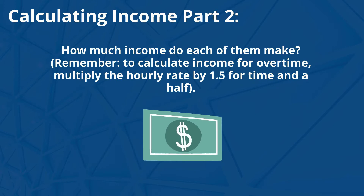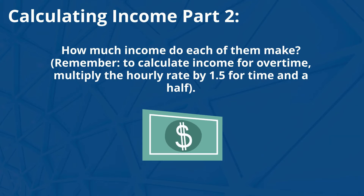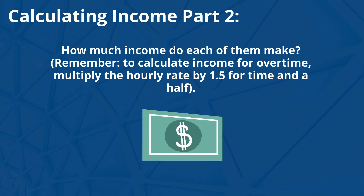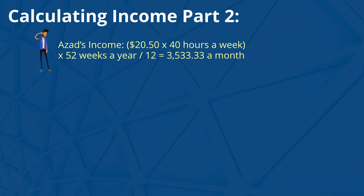Remember, to calculate income for overtime, multiply the hourly rate by 1.5 for time and a half. Asad's income: $20.50 times 40 hours a week times 52 weeks a year divided by 12 is equal to $3,533.33 a month.